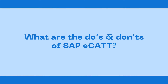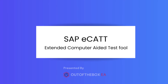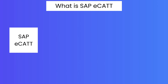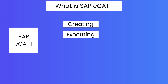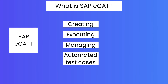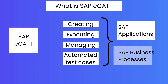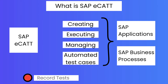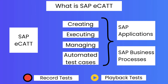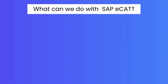At the end we will cover the do's and don'ts of using SAP eCATT. What is SAP eCATT? eCATT stands for Extended Computer Aided Test Tool. It is a test automation tool provided by SAP. Using SAP eCATT, you can create, execute, manage, and automate tests. You can test SAP applications and SAP business processes, record test cases, and play back tests whenever you want.